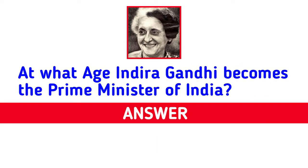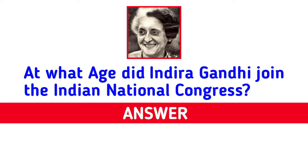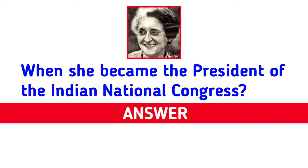At what age did Indira Gandhi become the prime minister of India? Answer: 48 years. At what age did Indira Gandhi join the Indian National Congress? Answer: 20 years. When did she become the president of the Indian National Congress? Answer: 1959.